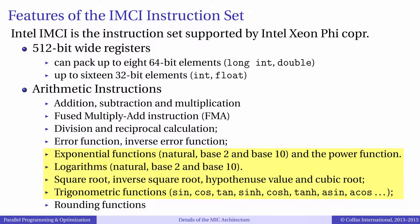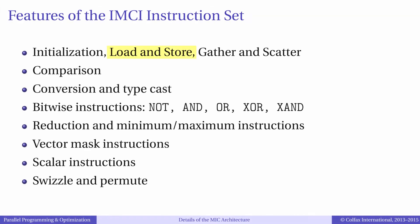There is also support for common transcendental functions like trigonometric, square root, and logarithmic functions, to name a few. For memory access, vector instructions support the standard load and store instructions to move data from memory to the vector register or from the register to memory. Xeon Phi also supports gather and scatter instructions, which load or store elements in a contiguous vector with a stride in memory. Other supported vector instructions include type conversion, comparison, and bitwise operations. There is also support for certain data manipulation instructions like permute and swizzle.